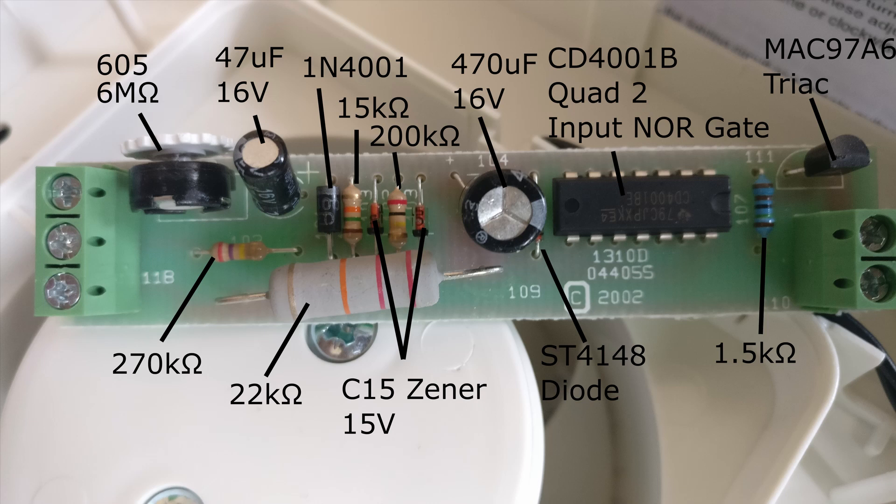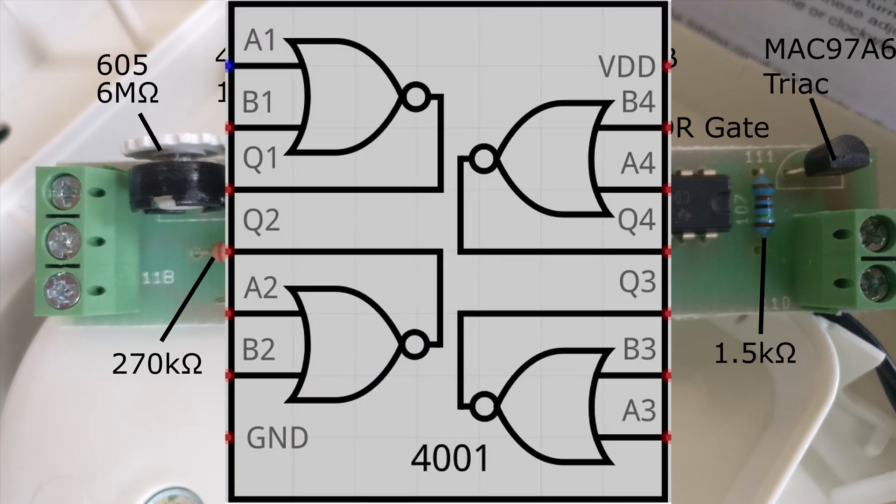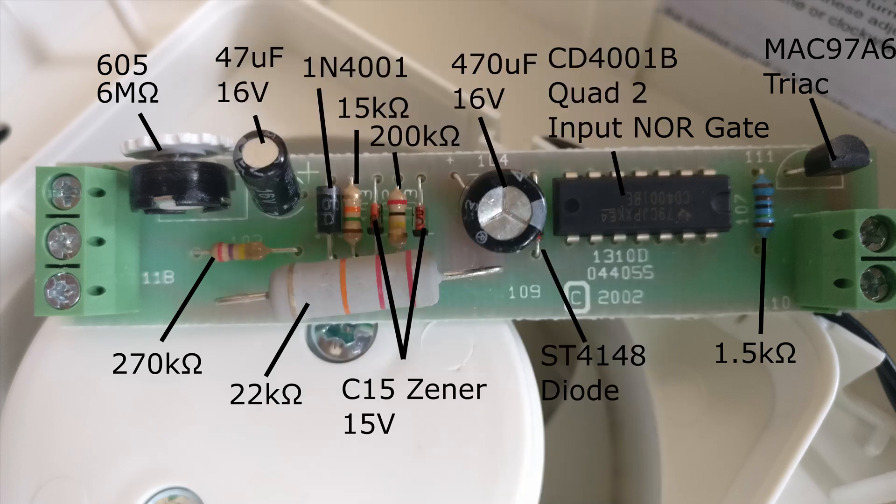The IC chip is a CD4001B quad 2 input NOR gate. Basically it's 4 NOR gates in one package, each with 2 inputs. The switching component, which I initially thought was a transistor, is actually a MAC97A6 triac which can conduct current in both directions. Perfect for switching alternating currents.